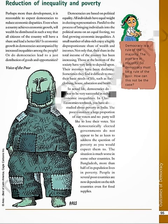Democracies are based on political equality — we are politically equal according to our constitution, we have a right to vote and to contest elections. All individuals have equal weightage in electing our representatives. But parallel to bringing individuals into the political arena on equal footing, we find growing economic inequalities. A small number of ultra-rich people enjoy a highly disproportionate share of wealth and income. Only five or six ultra-rich families and business houses exist in India while the rest of the population is poor. Their share in total income has been increasing while those at the bottom have little to depend upon and their incomes are declining. The gap between rich and poor is widening.